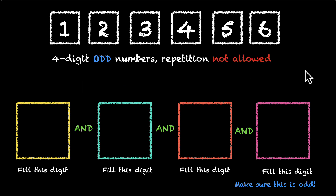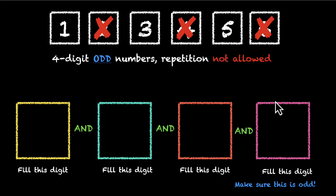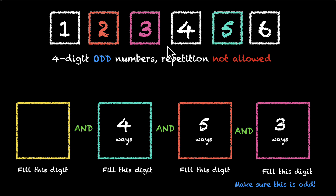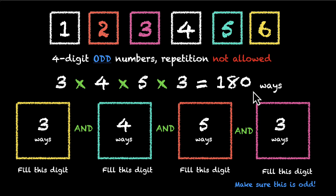Now for when repetition is not allowed. Again, we start with the pink box (last digit). We can't have 6, 4, or 2 — we have 1, 3, and 5, which means 3 ways. Let's say we pick 3. We're left with 5 digits, so the next box can be filled in 5 ways. Pick 2 — now 4 options remain. Pick 5 — now 3 options remain for the first box. Multiplying: 3 × 4 × 5 × 3 = 180 four-digit odd numbers where repetition is not allowed.